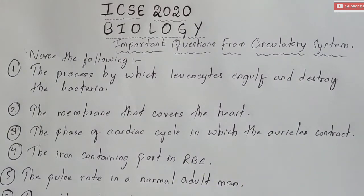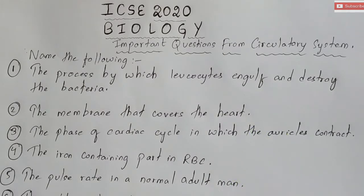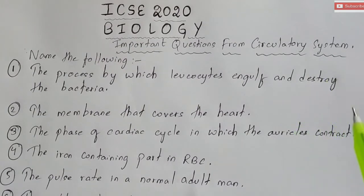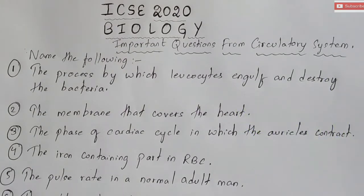If you want the PDF you can download it from there. These are basically your short questions — that is, 'name the following' type of questions asked from the chapter on circulatory system in your biology. So let us begin.